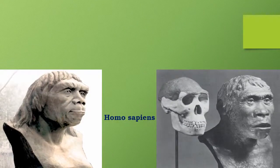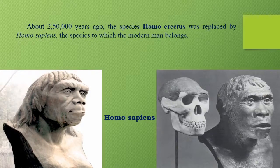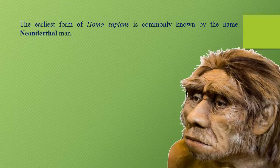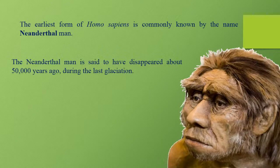About 250,000 years ago, the species Homo erectus was replaced by Homo sapiens, the species to which modern man belongs. The earliest form of Homo sapiens is commonly known as Neanderthal man. Neanderthal man is said to have disappeared about 50,000 years ago, during the last glaciation.